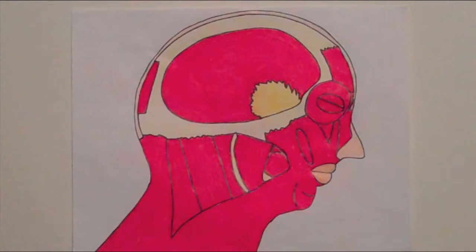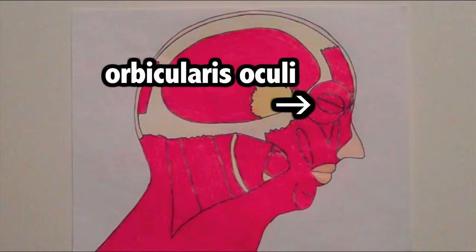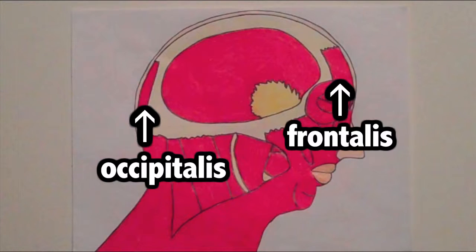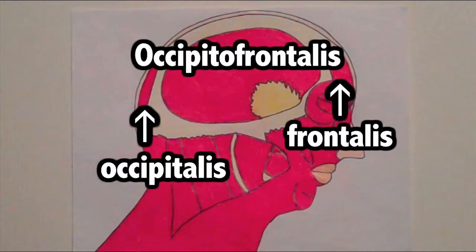The muscles surrounding your eyes are known as orbicularis oculi. These muscles help you blink your eyes. You have two muscles that are connected together: they are frontalis and occipitalis. When you combine them together they form a muscle called occipitofrontalis. There are two muscles that are connected together as one.